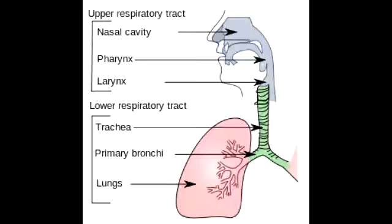What would happen if you aspirate a peanut while supine? If you aspirate a peanut while supine, the peanut would still go into the right inferior lobe because of the wider and straighter right bronchus. But because you're supine, the peanut will go into the superior portion of the right inferior lobe.